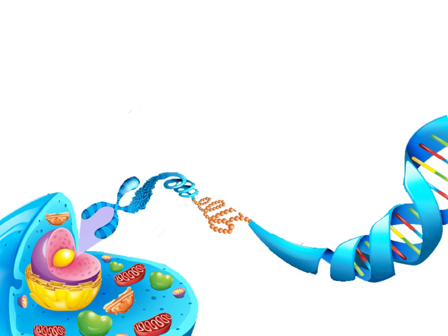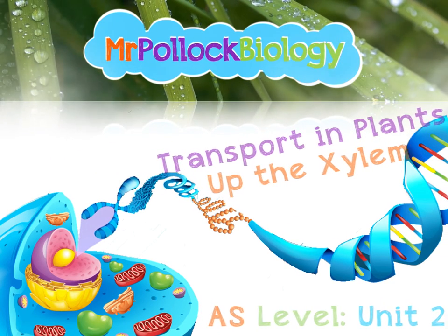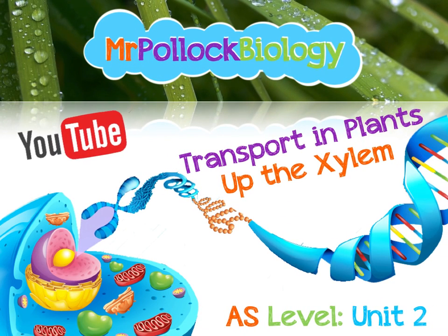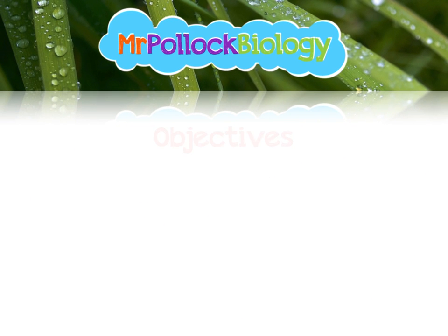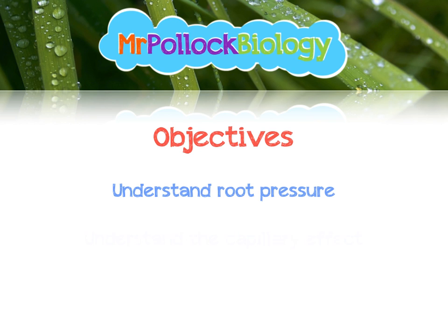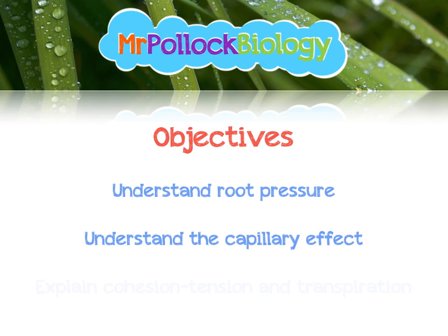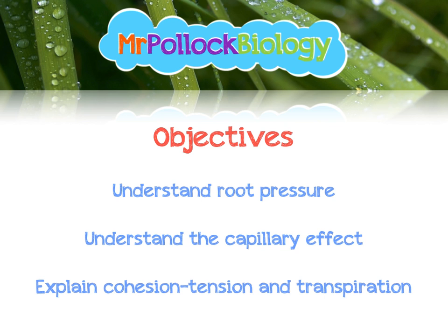Hello ladies and gents, we're doing another video on plants and we're looking still at transport in plants. This time we're going to look at the AS Unit 2 topic which is how water moves up the xylem. Here's what we're going to look at today in our objectives: the three different theories that contribute to water movement up the xylem — root pressure, capillary action, and cohesion tension and transpiration.